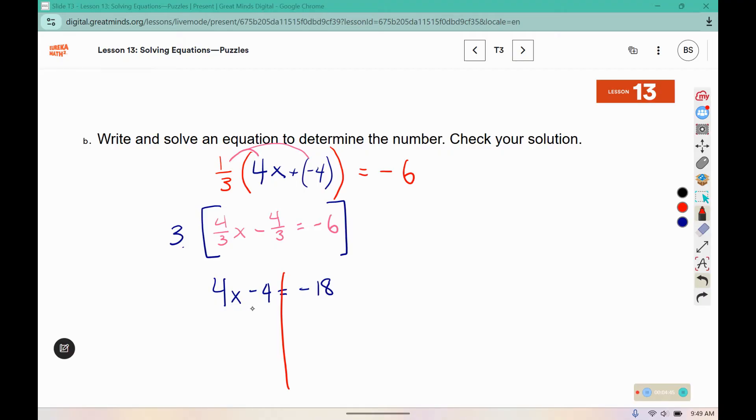We are going to move the 4 to the other side. In order to do that, negative 4 plus 4 gives us 0. Negative 18 plus 4 puts us back at negative 14. And I still have 4x over here on the left, and I divide both sides by 4. This gives me just x, and 14 divided by 4 is 3 and a half, but it is negative 14 divided by 4.